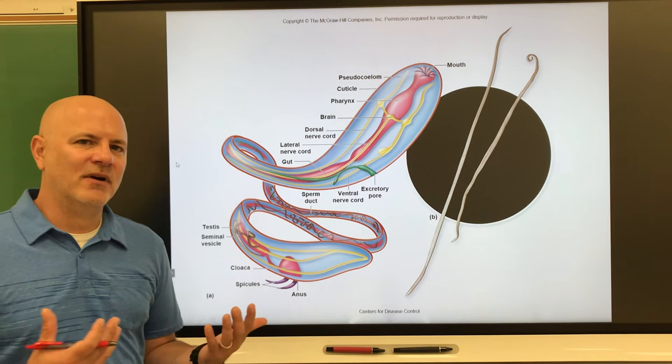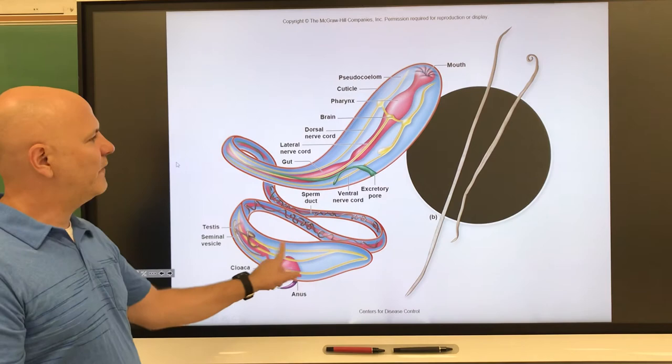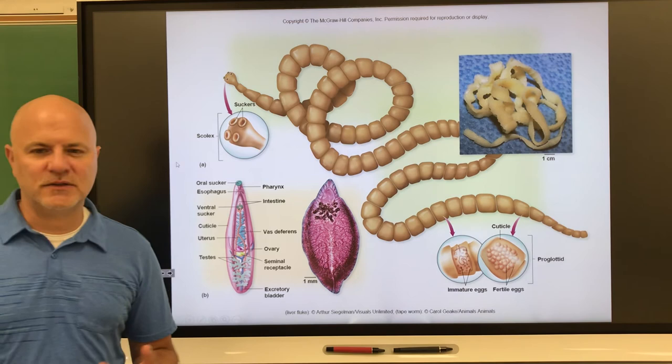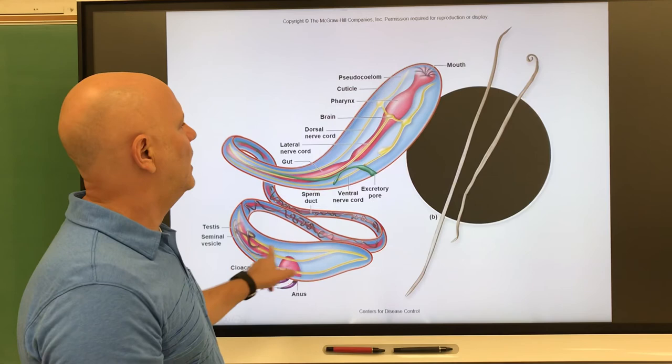In terms of reproduction, nematodes have separate sexes — here's a female and a male. Flukes can either have separate sexes or be hermaphroditic, meaning they carry both male and female gametes. Tapeworms are hermaphroditic.